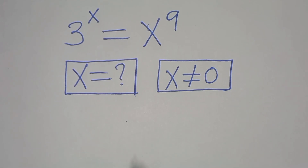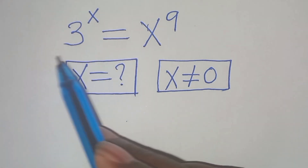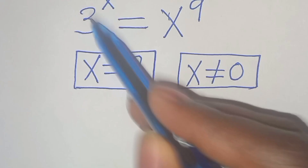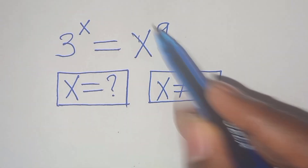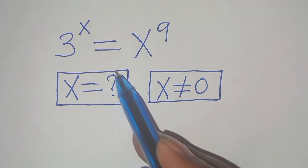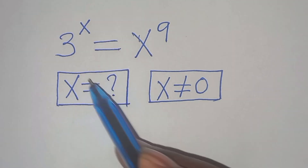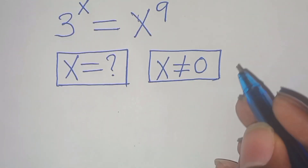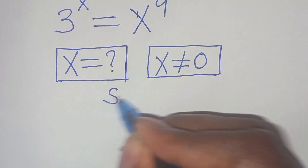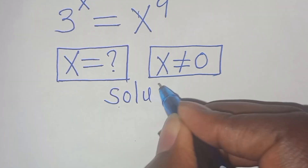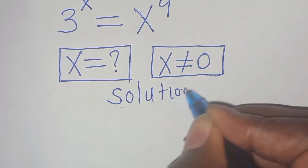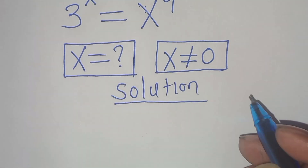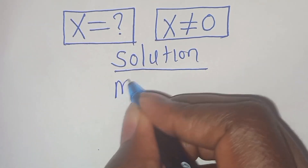Hello everyone, you're welcome to solve this nice exponential equation, which is 3 to the power of x, equal to x to the power of 9. What are the values of x, given that x is not equal to 0? Let's provide a solution. To solve this problem, we are going to apply two methods. Let's start with method 1.